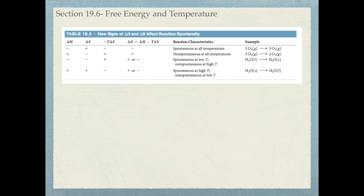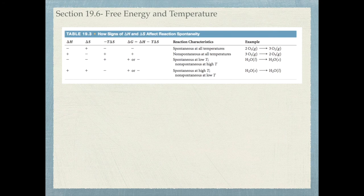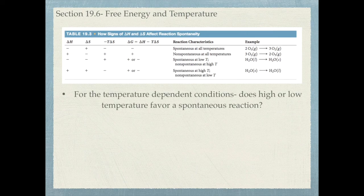The same logic applies when ΔH is positive and ΔS is positive. You're asking which has a bigger impact: ΔH being positive, or the fact that negative TΔS is negative. If temperature is high, negative TΔS becomes much larger than ΔH, making ΔG negative and the reaction spontaneous. So in some cases temperature doesn't matter, but when ΔH and ΔS are competing, you have to determine whether high or low temperature favors a spontaneous reaction.